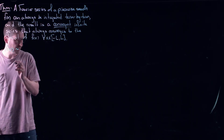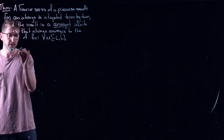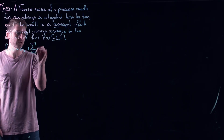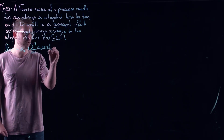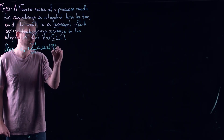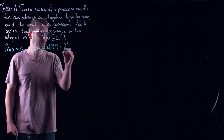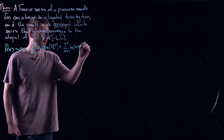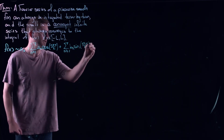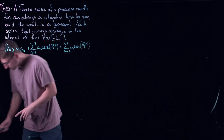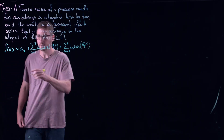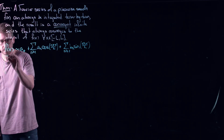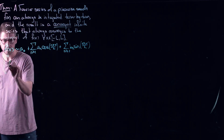If I have a piecewise smooth f of x, let's imagine I've got a nice Fourier expansion. It's piecewise smooth, so we know it can be written as a Fourier series. If you take the anti-derivative, I'm going to do it as a definite integral from minus l up to x. I need a different integration variable here — let's use t.